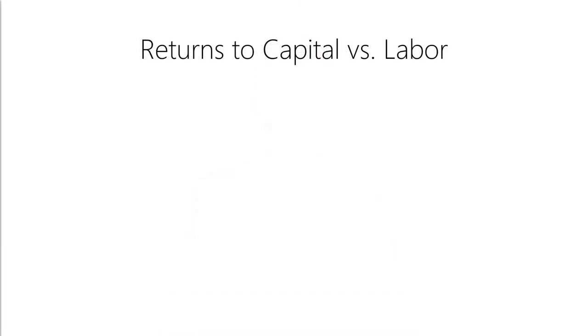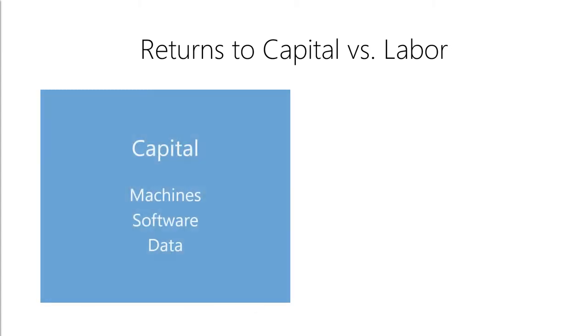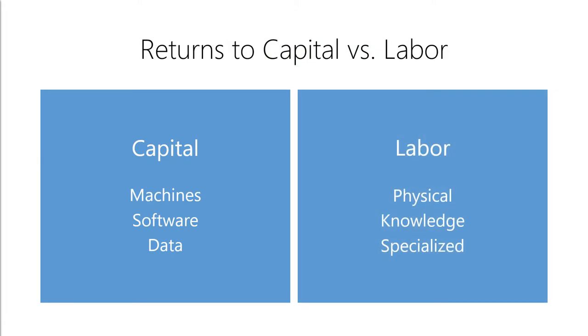First, we are seeing a shift in returns to capital versus returns to labor. Returns to capital are essentially how much money you can make by investing in capital assets. These include investing in machines, software, data, and more. Returns to labor are essentially how much money you can make by soliciting your labor for income. This includes physical labor, knowledge work, and highly specialized labor.